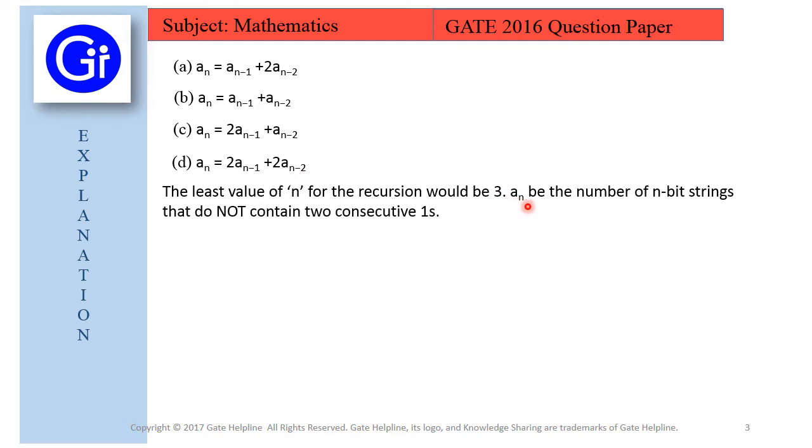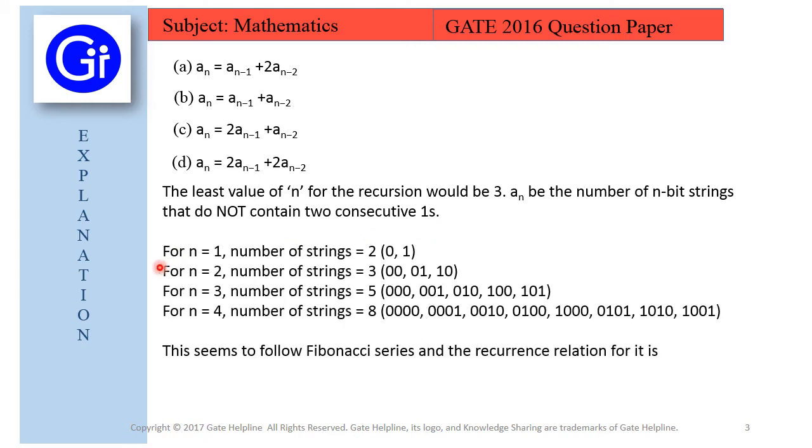In the question, a_n is the number of n-bit strings that do not contain two consecutive ones. Consecutive means 1-1 or 1-1-1, so the length must be greater than 1. For n=1, the string length equals 1, so the number of strings would be 2, that is 0 and 1. A single 1 is not considered as consecutive ones, so for n=1, the number of strings is 2.